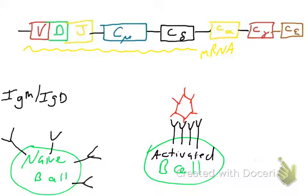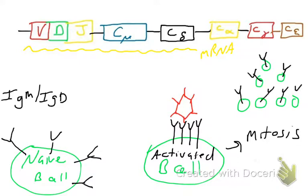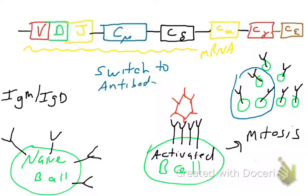Once a B cell goes from being naive to being activated, it undergoes something called clonal selection, which involves lots of mitosis. So this one B cell becomes an army of B cells. Now they still only have immunoglobulins embedded in their membranes — that's not helping fight an infection. What's going to help fight the infection is if some of these cells switch to antibody secretion. So how do these cells switch to antibody secretion? That's what we're going to cover right now.